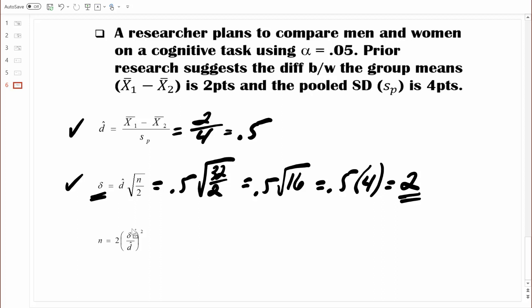So now we want to find a delta table. In other words, a power table. And then we're just going to look up that value of 2. And then we'll figure out exactly how much power was achieved in that study.